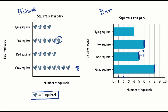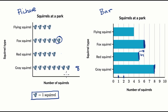So both picture and bar graphs can be good ways of thinking about the quantities you see. They're good for making comparisons, good for figuring out just how many of something you see, or what's the difference, or even the total of different categories — here, it's the squirrel types.